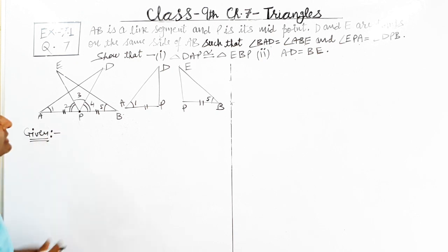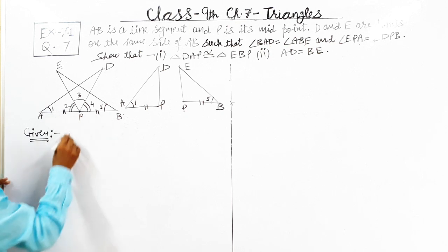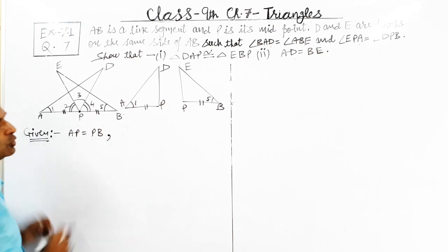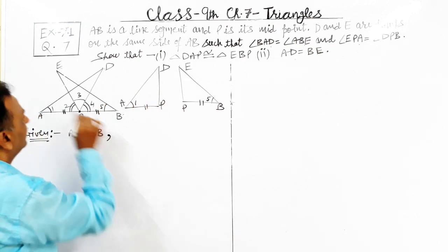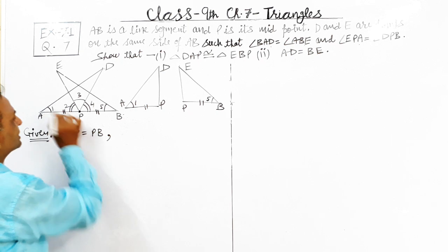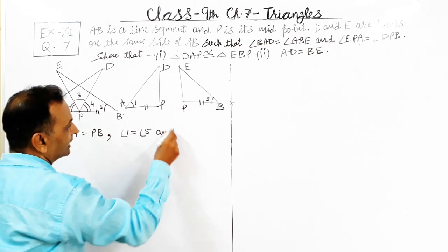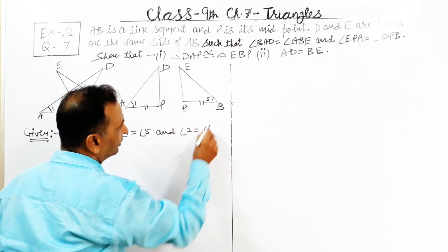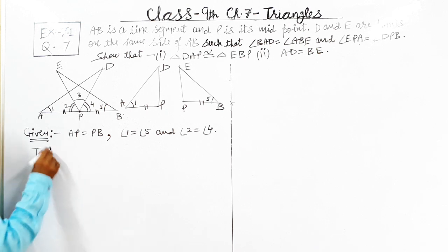Now for the Given, almost the same statement is to be written. AB is a line segment, P is the midpoint, that is AP equals to PB — it is given. Next, angle BAD means angle one equals to angle five, and angle two equals to angle number four — they are equal. These can be written in the Given section.